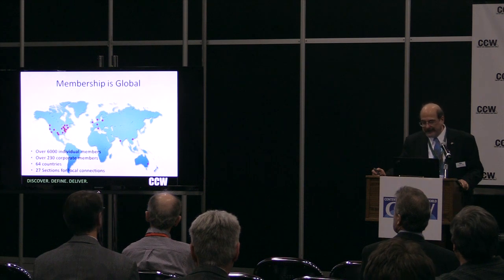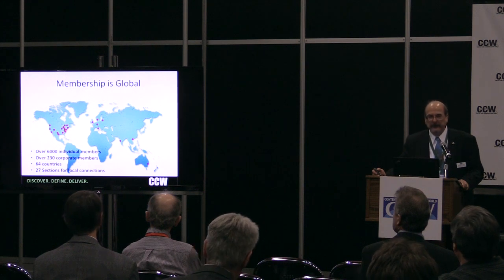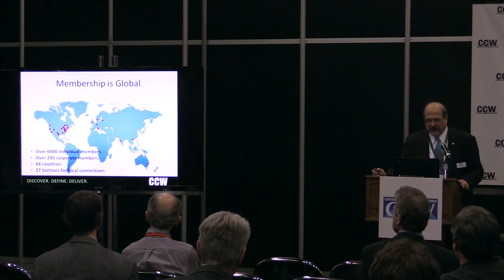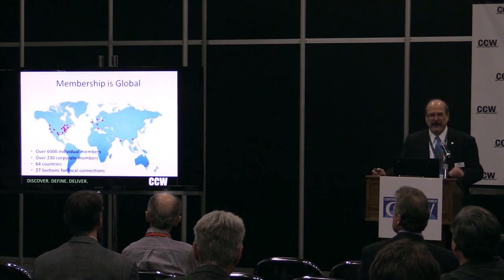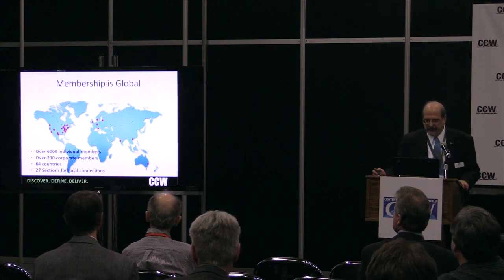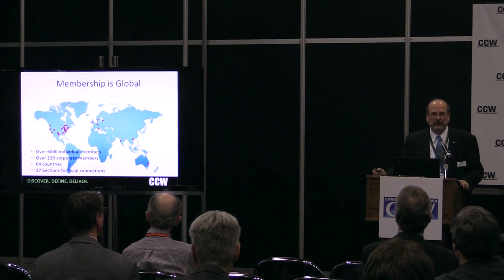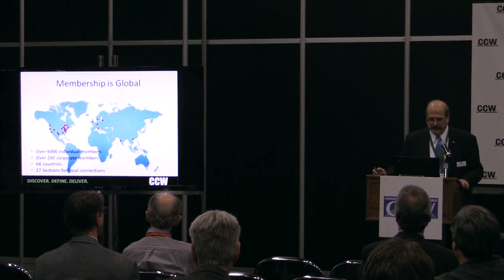If you count the little red dots on the map, you'll see there are 24 sections shown, because some sections are so close together they overlap. That's where our sections are. There is, in fact, a section here in New York, one of the largest ones in the Society.